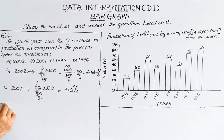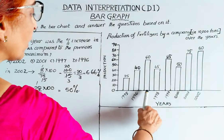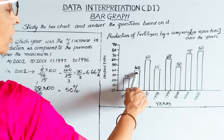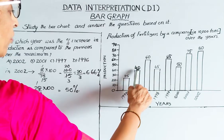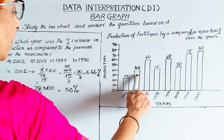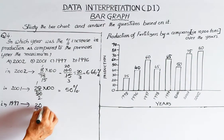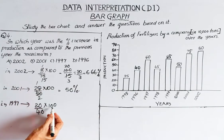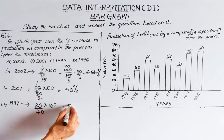Checking 1997: value is 60, previous year (1996) is 40. Difference is 20. 20 divided by 40 into 100 — since 20 over 40 is half — equals 50%.